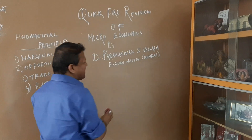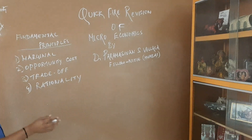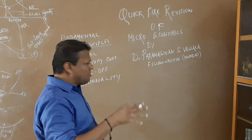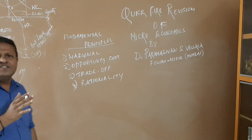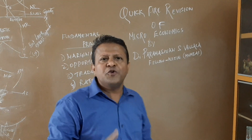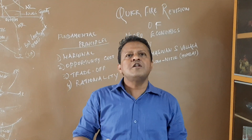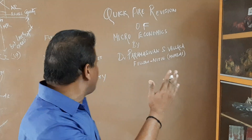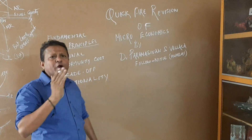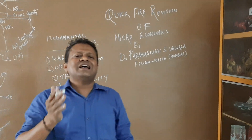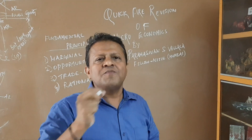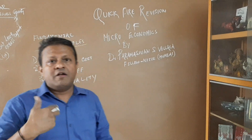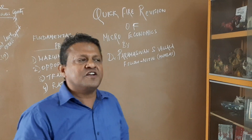Our focus today is microeconomics. Economics, we normally start with the fundamental principles — the principle of marginal, opportunity cost, trade-off, and rationality. Marginal means unit. Marginal in economics is very important — the marginal way of thinking is the economic way of thinking. Every unit produced is very important, and the expenditure thereon is called marginal cost. The unit extra produced is called the marginal product, and the revenue generated extra is called the marginal revenue.